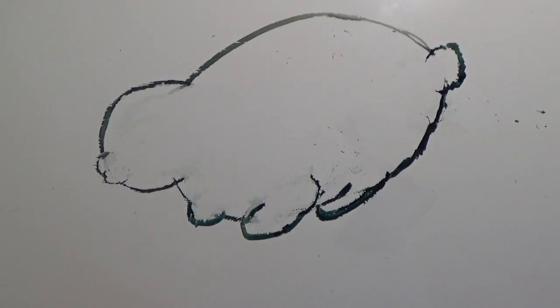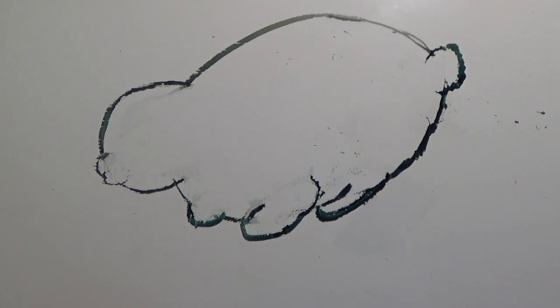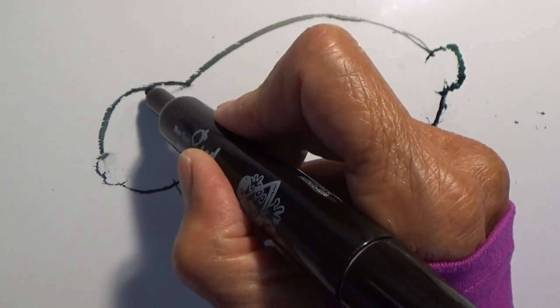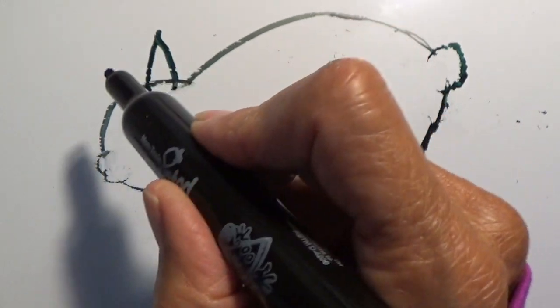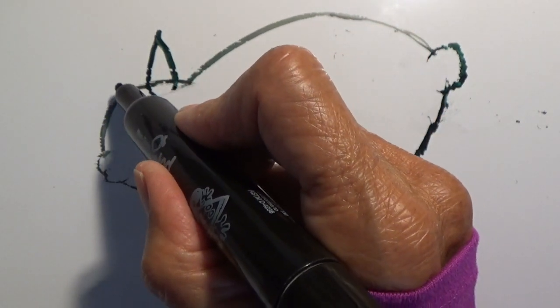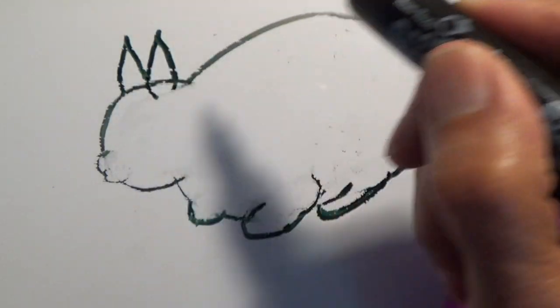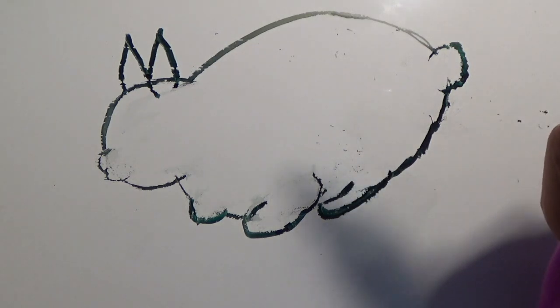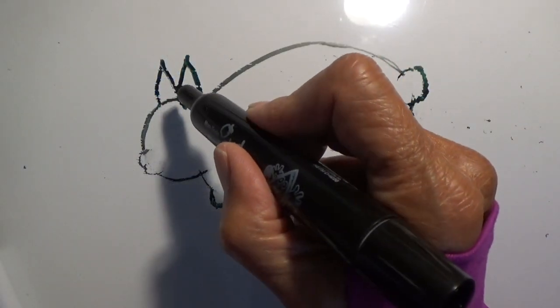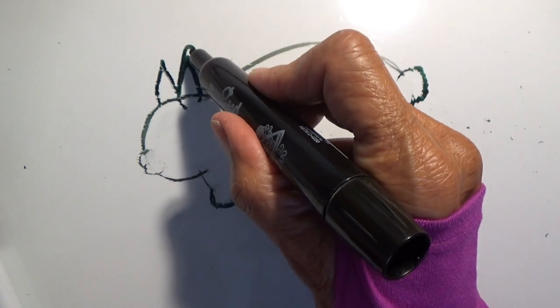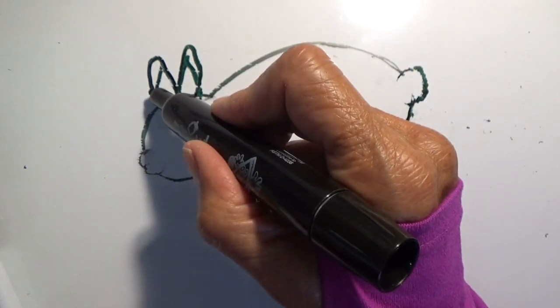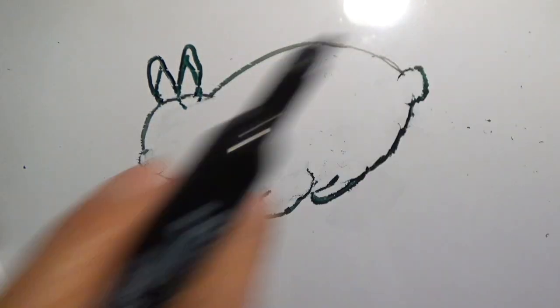What do we find on the top of our bunny rabbit's head? Ears. Yes. So let's draw some ears. Now you can draw them short like mine. You can draw them larger. You can also draw them without the points. You can draw them kind of oval like. It's up to you.